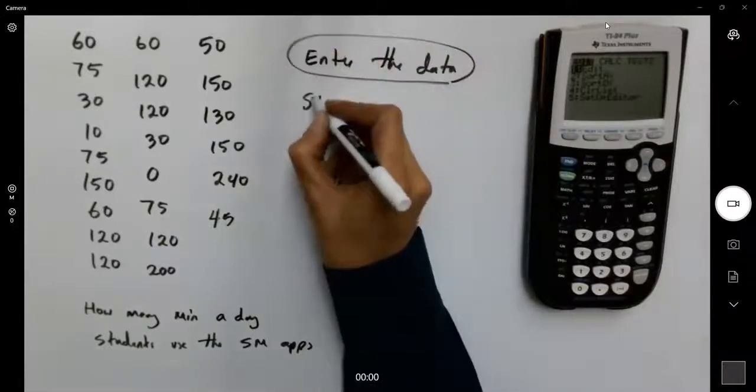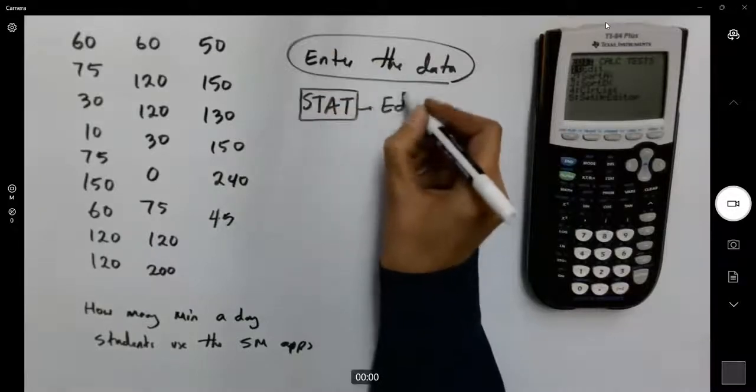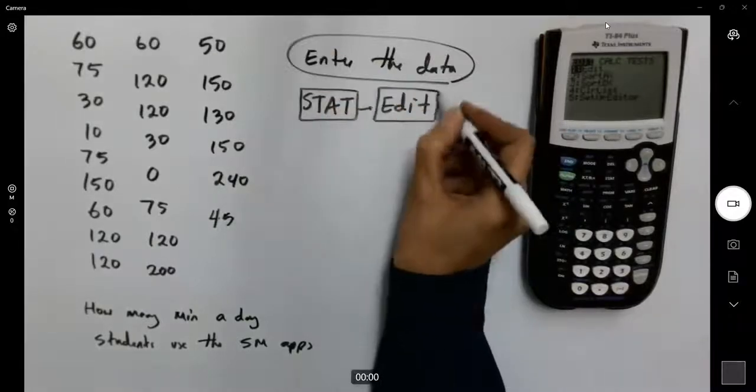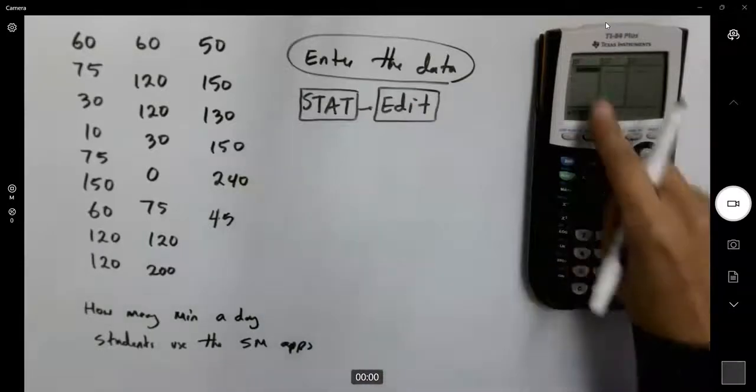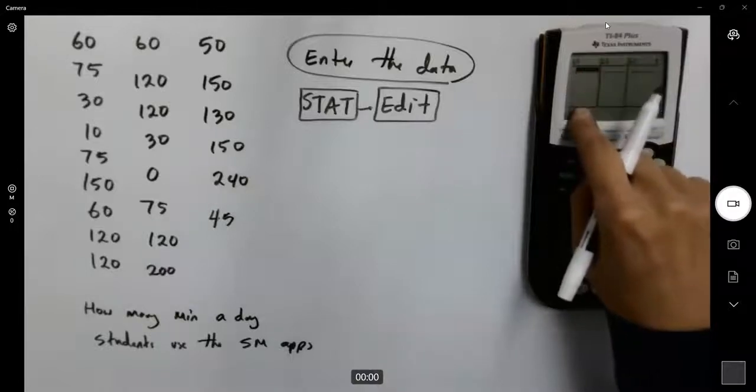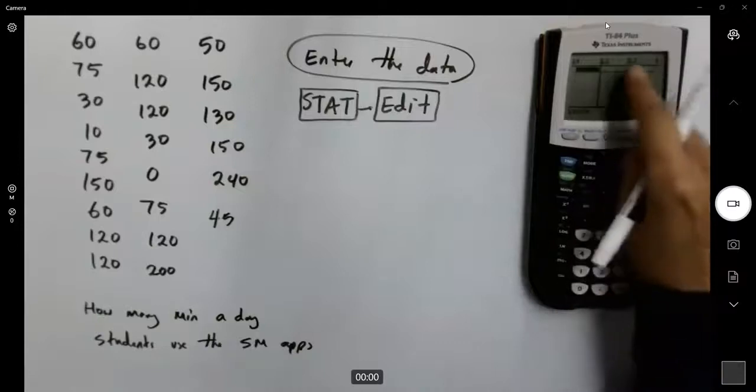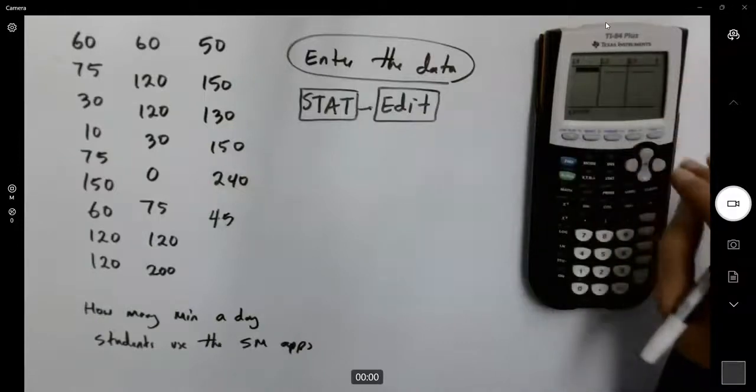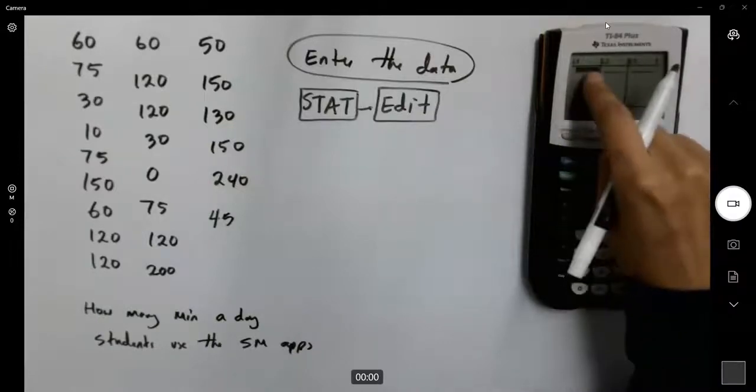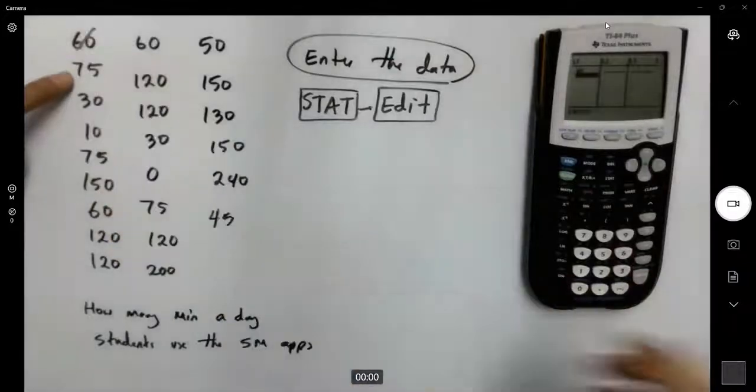Go to stat, and then edit. Now enter this information on L1. You can use L2, L3, or any other columns that you like. I'm going to just stick to L1. So the first number is 60. I'm going to enter 60.